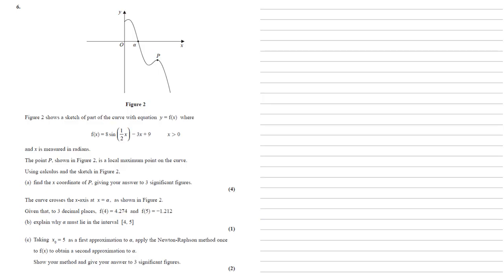Figure 2 shows a sketch of part of the curve with equation y equals f of x, where f of x equals 8 sine half x minus 3x plus 9, x is larger than 0, and x is measured in radians. The point P, shown in Figure 2, is a local maximum point on the curve. Using calculus and the sketch in Figure 2, we need to find the x coordinate of P, giving our answer to three significant figures.